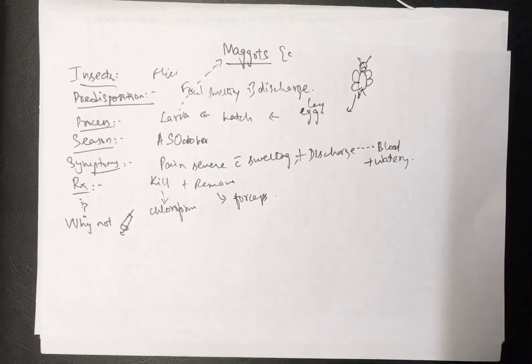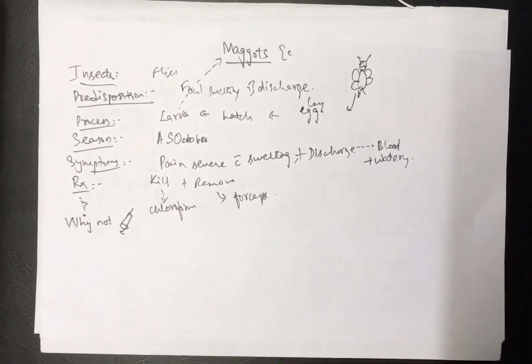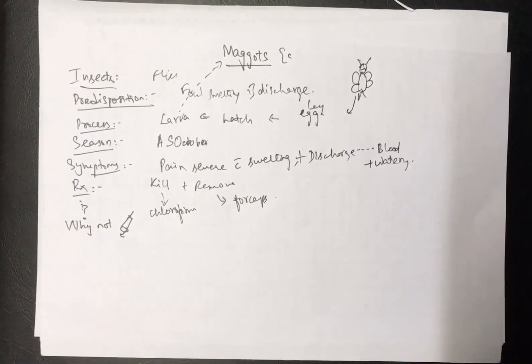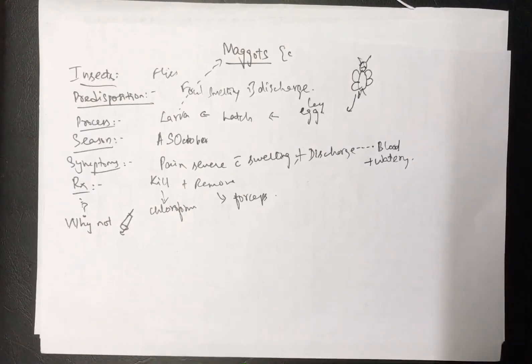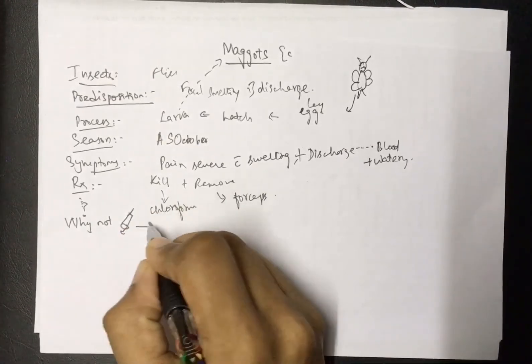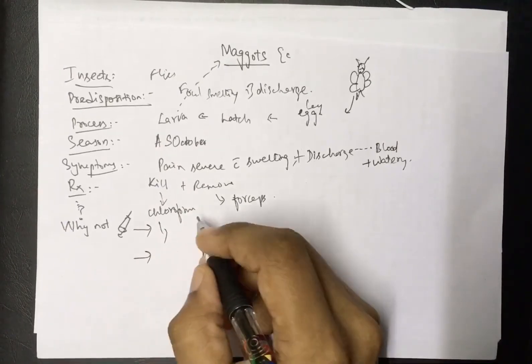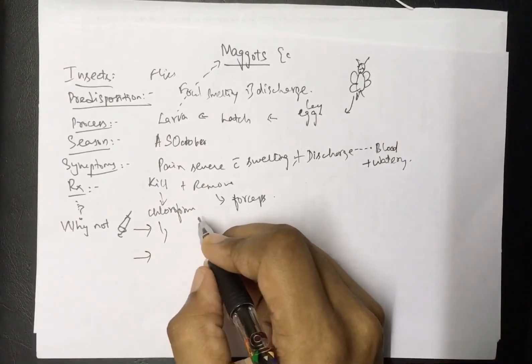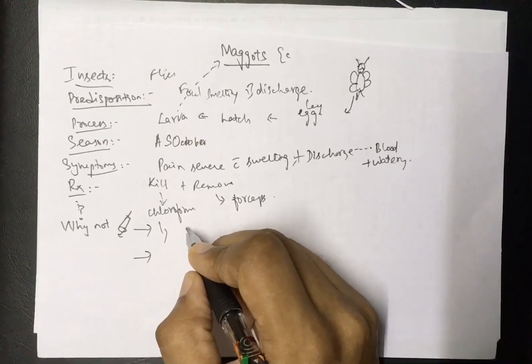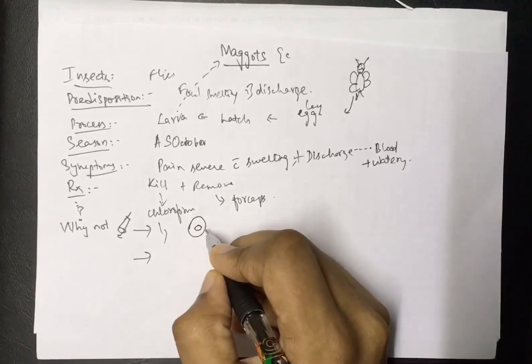Well, syringing cannot be used due to a lot of reasons. There are two reasons. First reason: you don't have to use syringing because the tympanic membrane may have perforated because of the maggots. Maggots need food, and they may have started eating the ear drum.